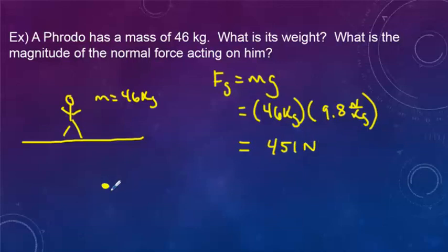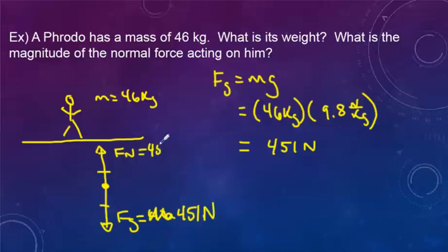But what's more important is if we draw the free body diagram, we have a downward force of gravity. We have an upward normal force. And if he's at rest or moving with a constant velocity, those two forces are balanced. So if the weight is 451 newtons down, then the normal force is also 451 newtons but pointing in the upward direction. So if you know the weight, you consequently know the normal force as well. And these two are equal if there's zero acceleration, which remember, zero acceleration is not moving or moving with a constant speed.